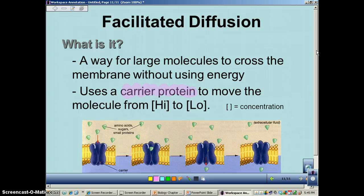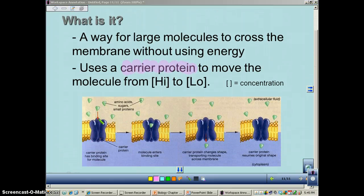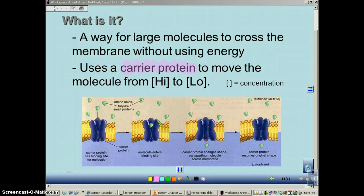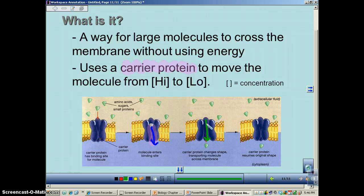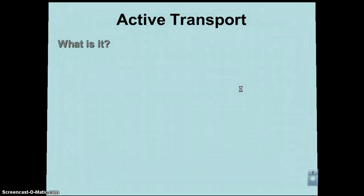These molecules have to go through a special protein called a carrier protein, which helps carry them across the membrane. The carrier protein acts like an automatic door. As the protein fits right in, the shape changes and it automatically opens, pushing the molecule through, then closes once it gets through — just like an automatic door at a store that opens as you walk in front of the sensor. That ends today's podcast. Make sure you check out podcast number nine, where we talk about active transport.